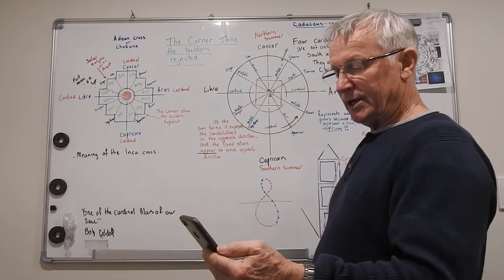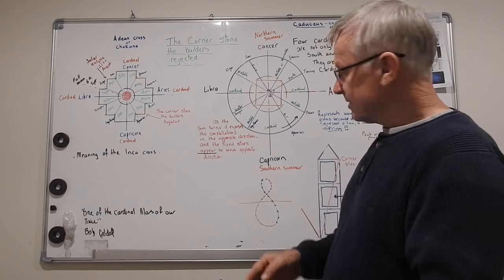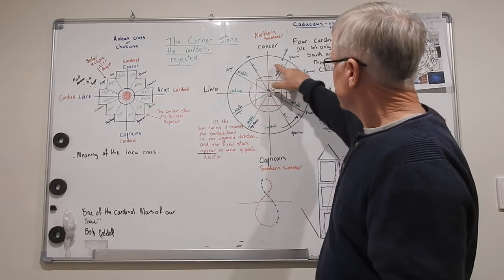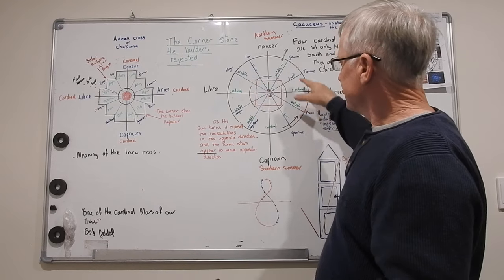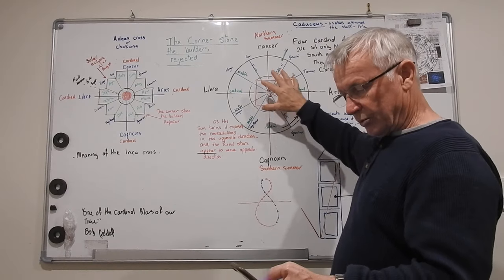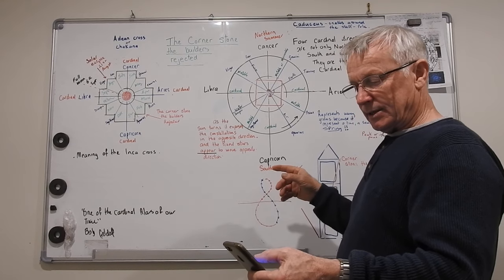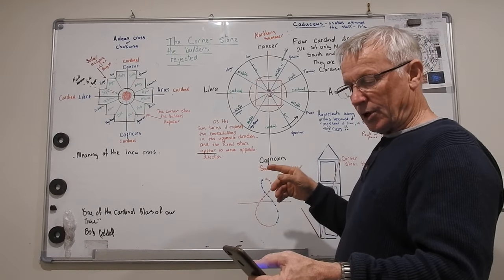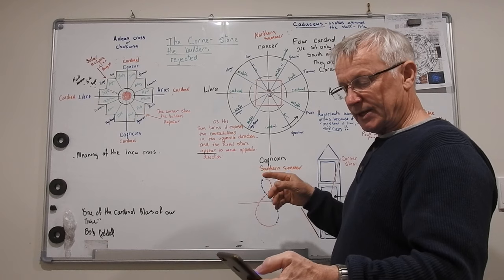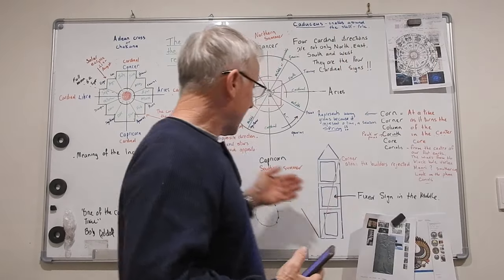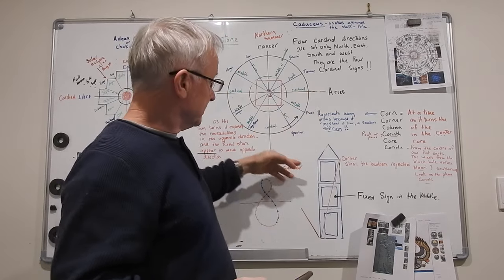Jesus said to them, did you never read the scriptures? The scriptures. This is regarding the scriptures. These cardinal signs, the zodiac, constellations, the stories are all about that. Did you never read the scriptures? A stone which the builders rejected, this has become the chief cornerstone. This came about from the Lord and it is marvelous in our eyes. This came about, it came about around the corner. Cornerstone, it's a seasonal change.